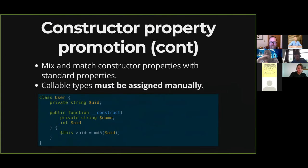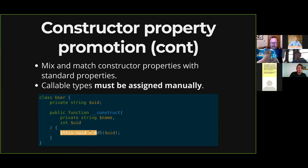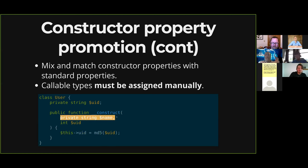You can also interact with regular standard properties inside the constructor. For instance, I have an int UID and I still declare it, but because it's an int I need to cast it to a string. Anything declared by property promotion in the signature has already been defined, so I can interact with those values within my constructor if I want to do other calculations or initializations.